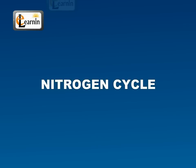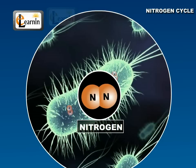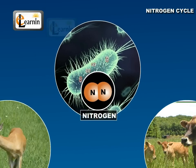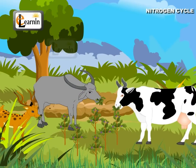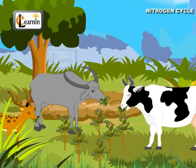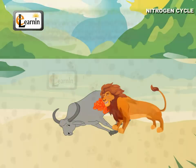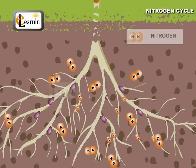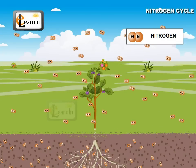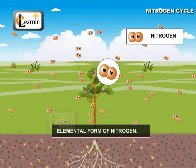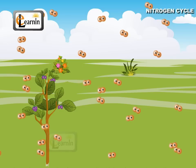Nitrogen Cycle. Nitrogen is one of the most important constituents of all living organisms, from bacteria to man. Animals obtain required amounts of nitrogen by eating plants and other animals. However, plants obtain nitrogen from either the soil or the air. Air has large amounts of nitrogen in its elemental form, but plants cannot use nitrogen in its elemental form.